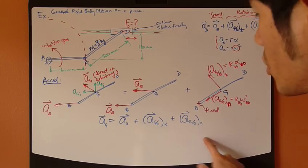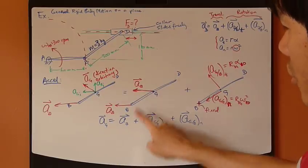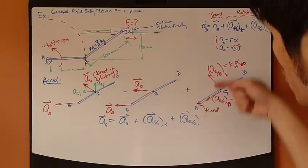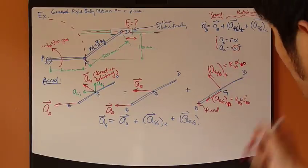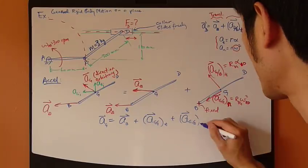So, here's the equation. A_G vector equals A_B vector plus these two components right here. Vector and vector, and then just continue and expand it. Normal.